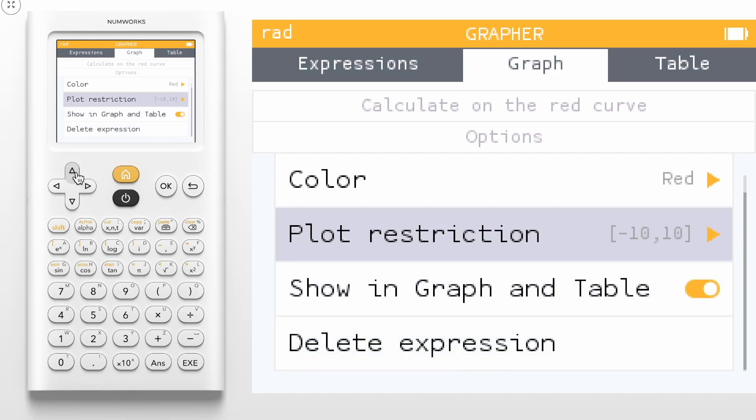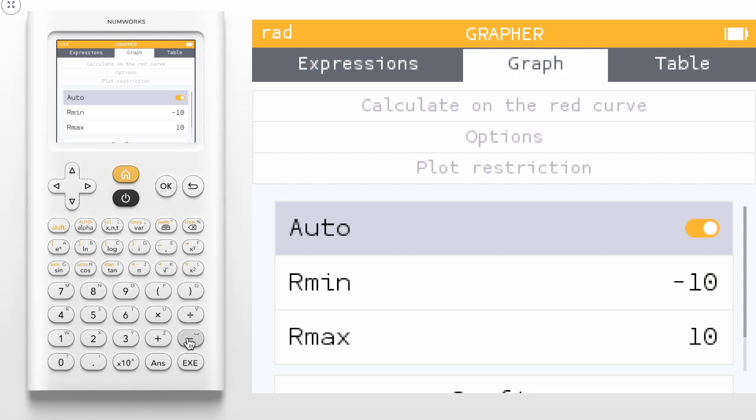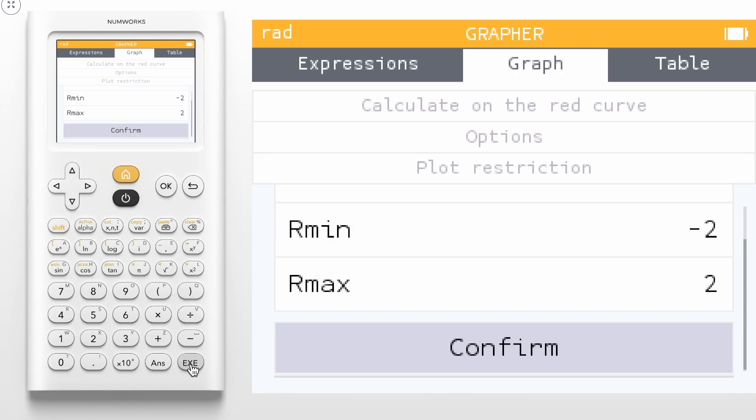Let's change our plot restriction. We're going to navigate and press OK, and then input the R values you're interested in the line covering. I'll go from negative 2 to 2.